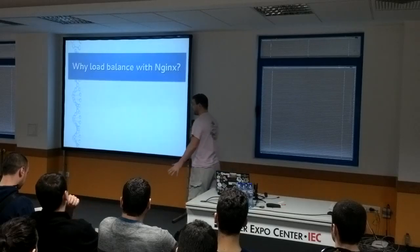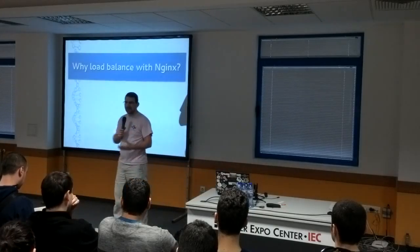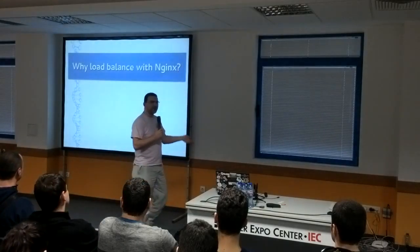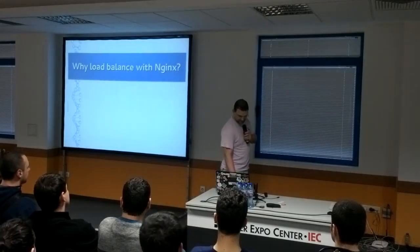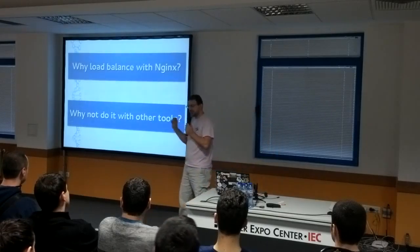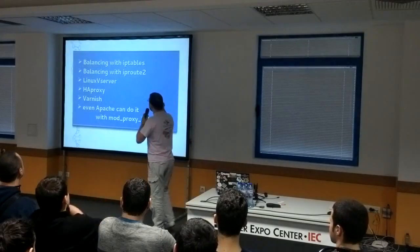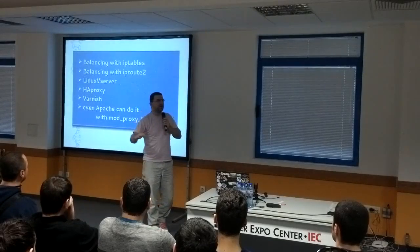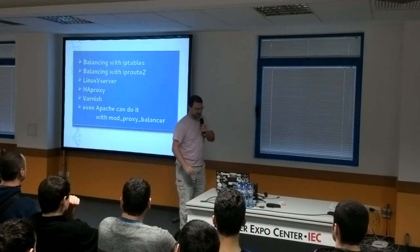So first of all, why would you choose NGINX? Isn't there something better, faster, more economic for your resources? Most probably yes, but the other tools have some issues. First, we'll start with pure IP tables balancing. Who here knows what IP tables is? For the rest of you, it's a firewall, and with the firewall there are some magic commands I can write there.